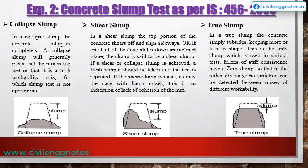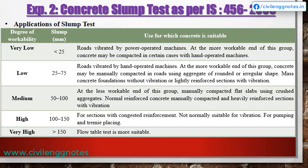In a true slump, the concrete simply subsides, keeping more or less to shape — this is the only slump used in various tests. Mixes of stiff consistence have a zero slump, so in the rather dry range no variation can be detected between mixes of different workability. Depending upon the various slump values, concrete is used in different suitable places, as shown in the table.